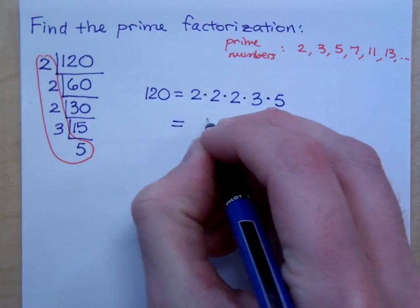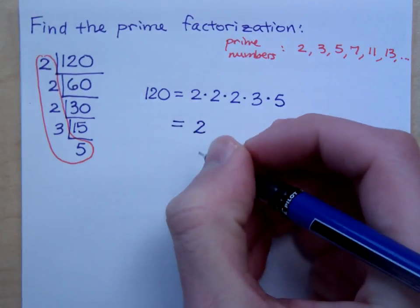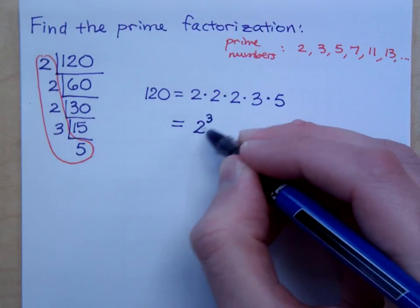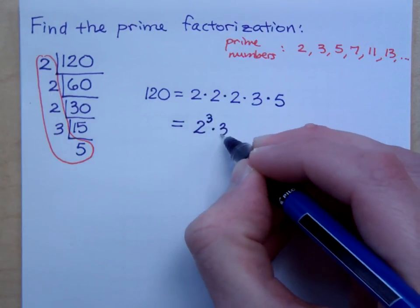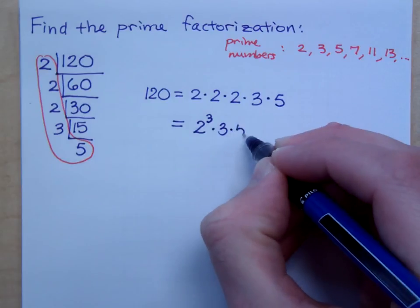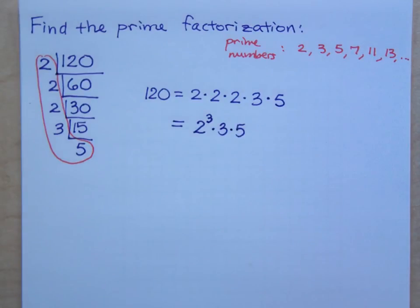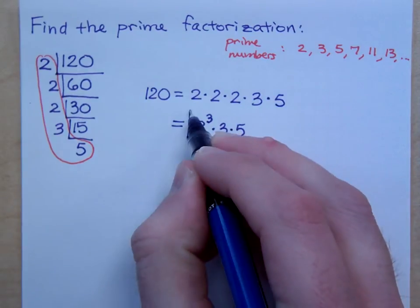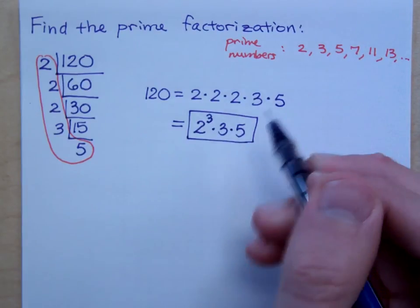Now, sometimes you will see this condensed using exponents. So, this is 2 to the what power. I've got 3 factors of 2. That's why I've got the 3 there. Times 3 times 5. So, that's your prime factorization. This is what I expect you guys to be able to show me on a test or a quiz. Both of those? Or the one that you're boxing in? Either one.